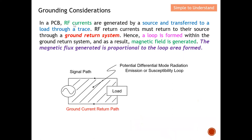In a PCB (printed circuit board), RF current is generated by a source and transferred to a load through a trace. The source generates a current and delivers it to the load. RF return current must return to their source through a ground return system — the load needs to return the current back to the original source. Hence, a loop is formed within the ground return system. With these two paths — supply and return — a closed loop is formed, and as a result, a magnetic field is generated.